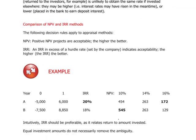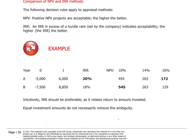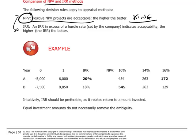We want to spend a few minutes on the comparison of the net present value and IRR methods. We can set forth a rule: positive NPV projects are acceptable, and the higher the NPV, the better. In the case where there is ambiguity in outcomes between NPV and IRR, the NPV measure is king — it rules at the end of the day as to whether to undertake a project.